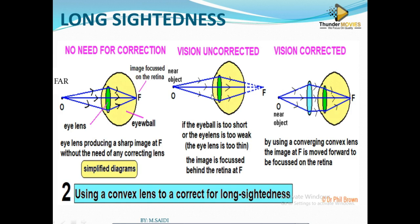The remedy for long-sightedness is to put on a convex lens — a converging lens. The beam comes in large, so it is converged before it reaches the eye's lens. By the time it reaches the lens, it appears as if it is coming from a far object. The lens converges it further and the image will be focused onto the retina. You put on a converging convex lens and the image is shifted back to the retina.